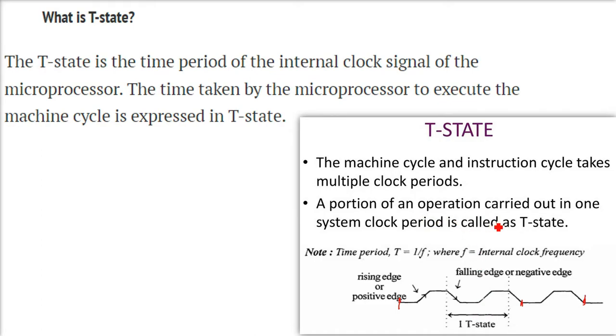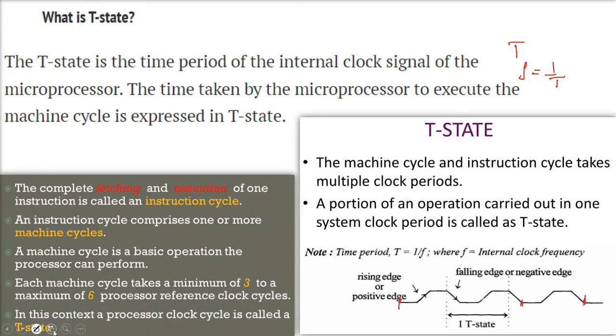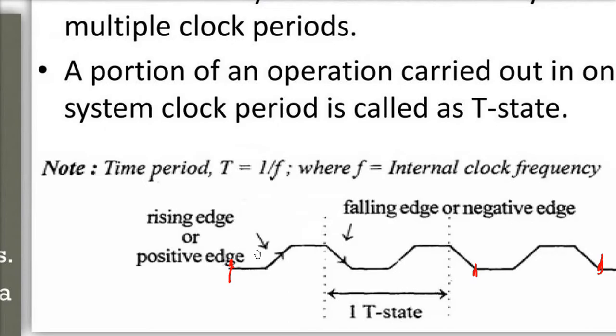How do you get this clock period from the frequency? Because frequency is 1 by T, time is 1 by F. The frequency is already specified, time you can find out. And in this time, what is the portion of operation being carried out? This is called the T-state.